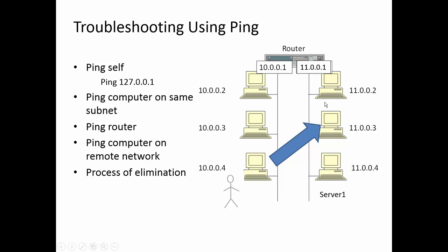Next, try to ping another computer on the remote network. If you cannot, that implies the cable fell out of the router on that side. If you can, the cable is plugged in. Finally, ping the server the user is trying to access. If you can ping another computer on the remote network but not the server, that implies the server is not turned on, the cable fell out, it has a bad NIC, or TCP/IP is misconfigured. But if you can ping the server, nothing is wrong with TCP/IP, cabling, or the router — most likely it's a higher-layer problem, such as the user forgetting their password or username.